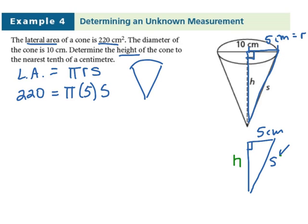Let's find the slanted height first. On the left-hand equation, we have 220, and on the right-hand equation, we have 5π times s.